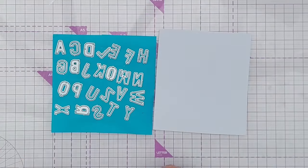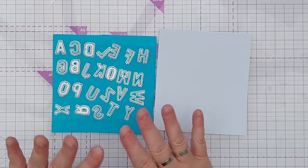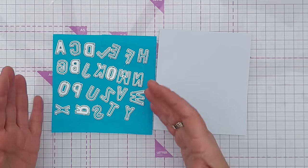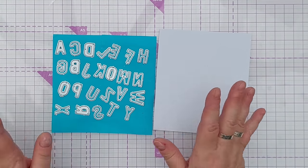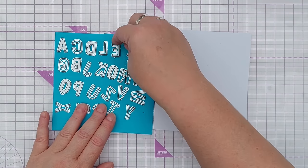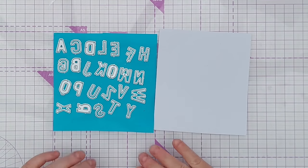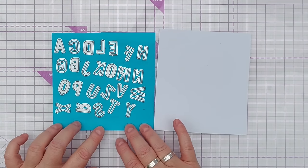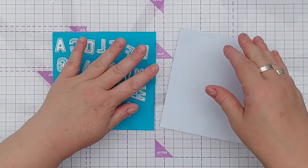First things first, I've taken a whole alphabet of dies all the same style. There's no reason why you can't mix and match styles, so feel free to do that if you want. I've stuck them cutting side up on this piece of sticky note.